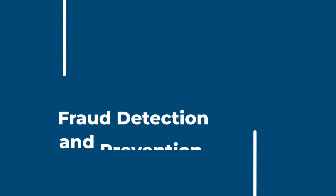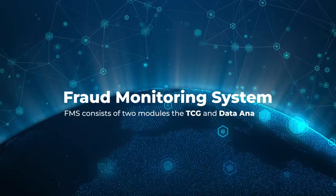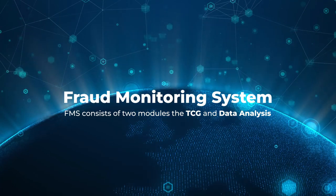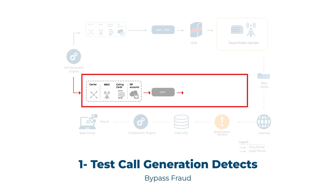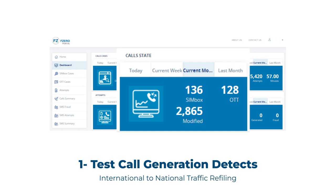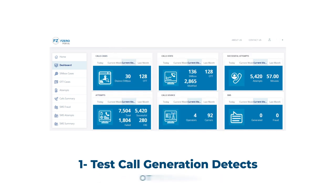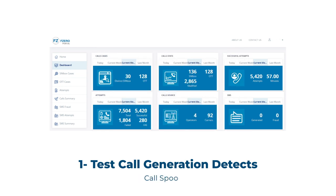Fraud detection and prevention: The Fraud Monitoring System (FMS) consists of two modules — the TCG and data analysis. Test Call Generation detects bypass fraud, international to national traffic refiling, false answer supervision, OTT bypass fraud, and call spoofing.